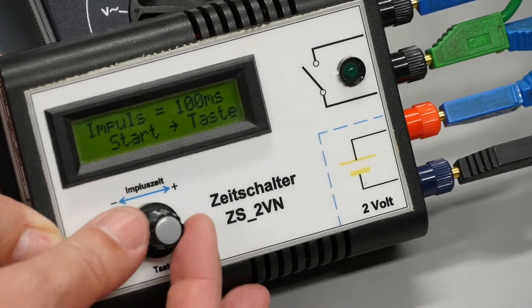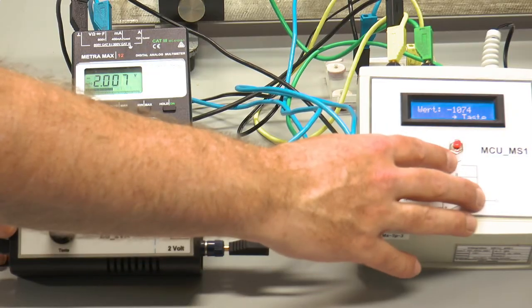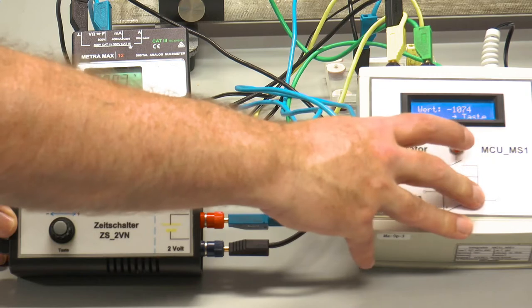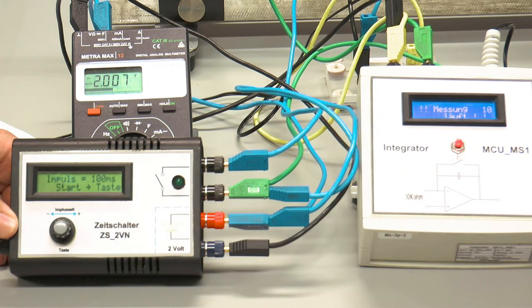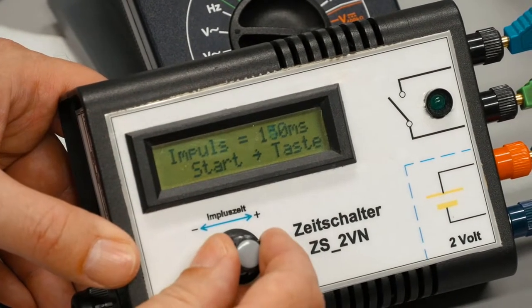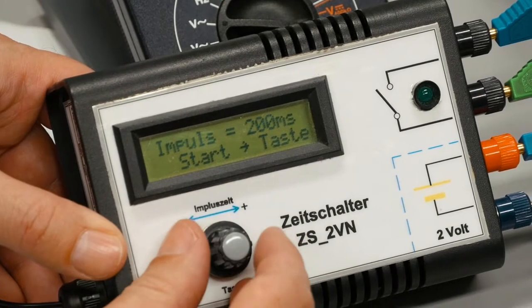The pulse time can be set with a rotary knob in the range from 50 to 500 milliseconds. The switch is triggered by pressing the knob. Calibration is performed with 10 different pulse lengths over the entire adjustable range. The part of the circuit which is only used for calibration can be removed after this measurement.